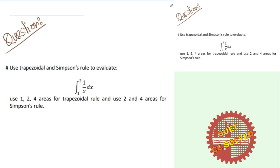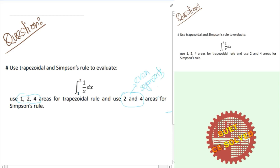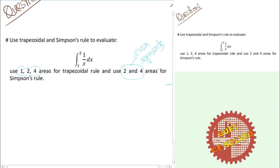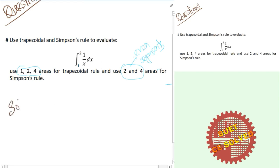Trapezoidal and Simpson's rule. The question is: use the Trapezoidal and Simpson's rule to evaluate the integration of 1/x dx from 1 to 2. We will use 1 to 4 areas for the Trapezoidal rule, and 2 and 4 areas for Simpson's rule. Note that Simpson's rule can only be applied to an even number of areas.